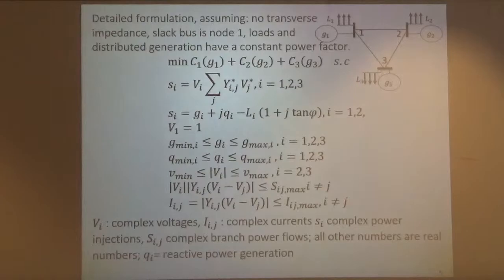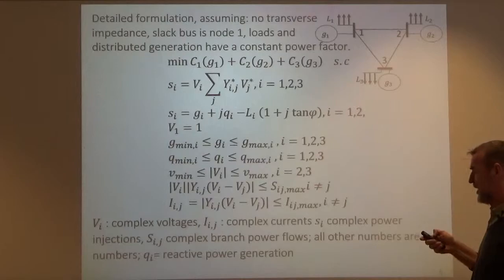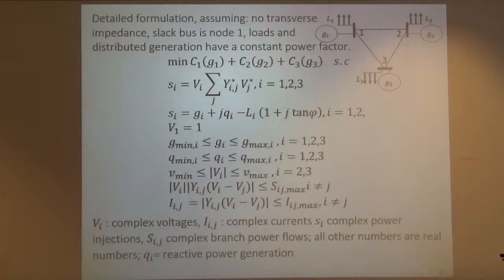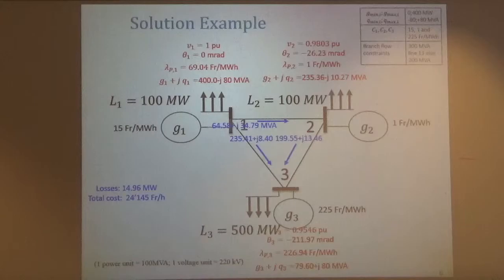So this is the problem we are formulating. To solve it, I can ask MATLAB to solve it using fmincon. This is a constrained optimization problem. I have a relatively small number of optimization variables — g1, g2, g3 — and all the g's, v's, and q's are optimization variables. By brute force, I asked MATLAB to solve for it.